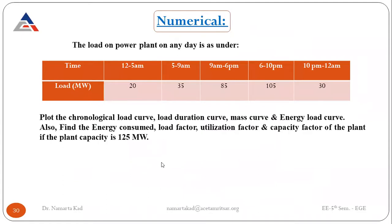The next example: load on a power plant on any day — from 12am to 5am: 20 MW; 5am to 9am: 35 MW; 9am to 6pm: 85 MW; 6pm to 10pm: 105 MW; 10pm to 12am: 30 MW. Installed capacity is 125 MW. We must plot the chronological load curve, load duration curve, mass curve, and energy load curve, and calculate energy consumed, load factor, utilization factor, and capacity factor.